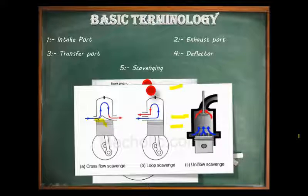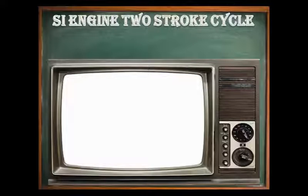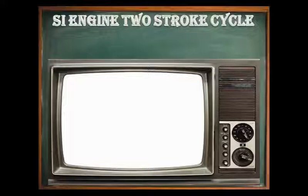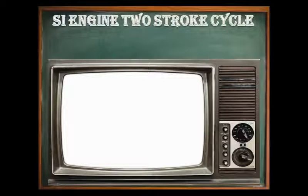Now let us discuss the working cycle of the two-stroke SI engine. In a two-stroke SI engine, a cycle is completed in two strokes of the piston or one complete revolution of the crankshaft, i.e. 360 degrees. In this engine, the suction stroke and exhaust stroke are eliminated and ports are used instead of valves. Petrol is used in this type of engine. The two-stroke SI engine completes a cycle of events — induction, compression, power, and exhaust — in one revolution of the crankshaft or two complete piston strokes.